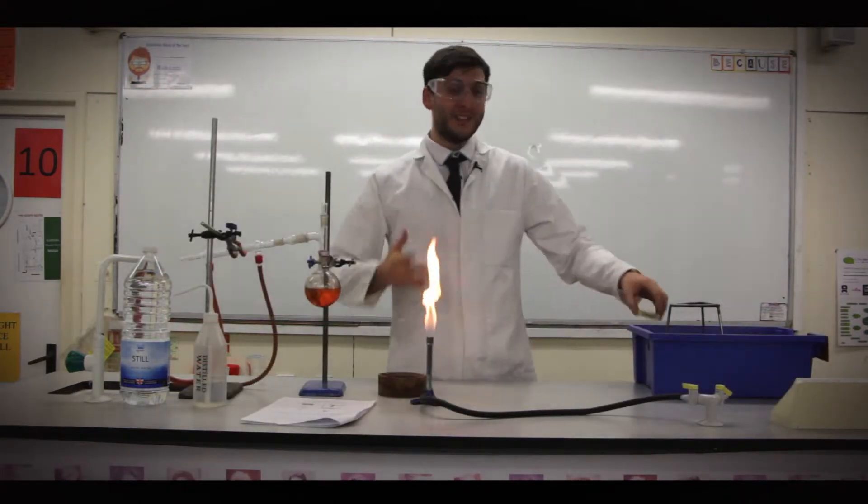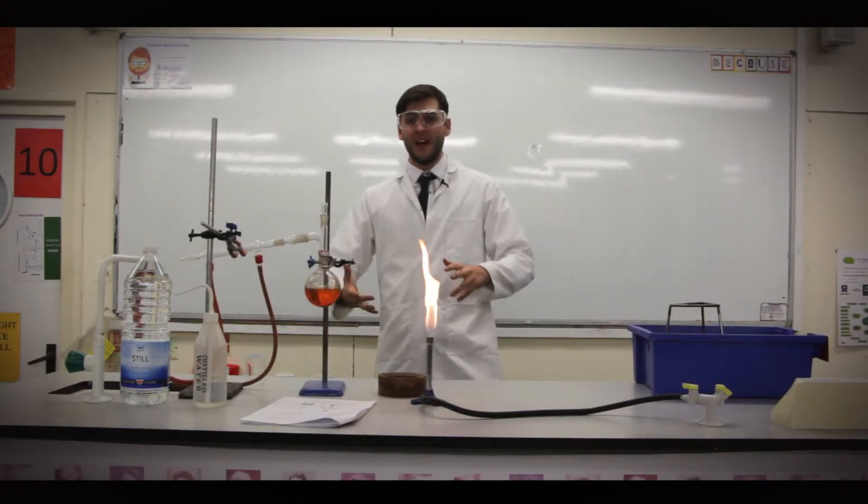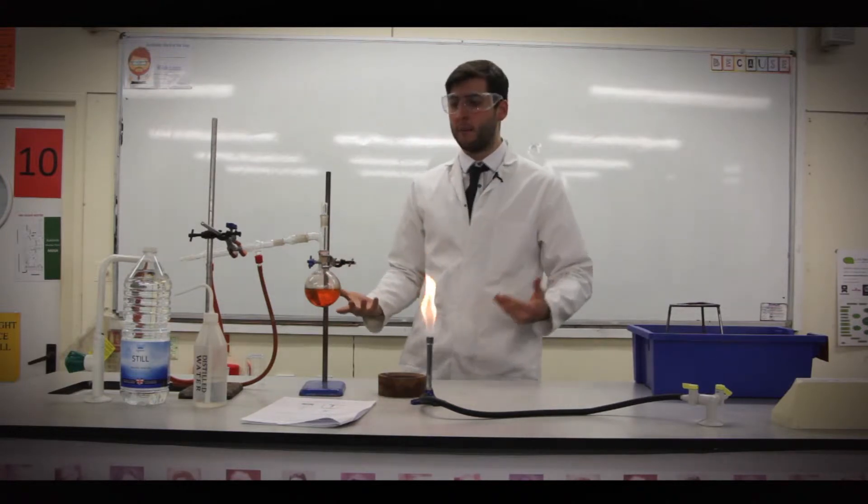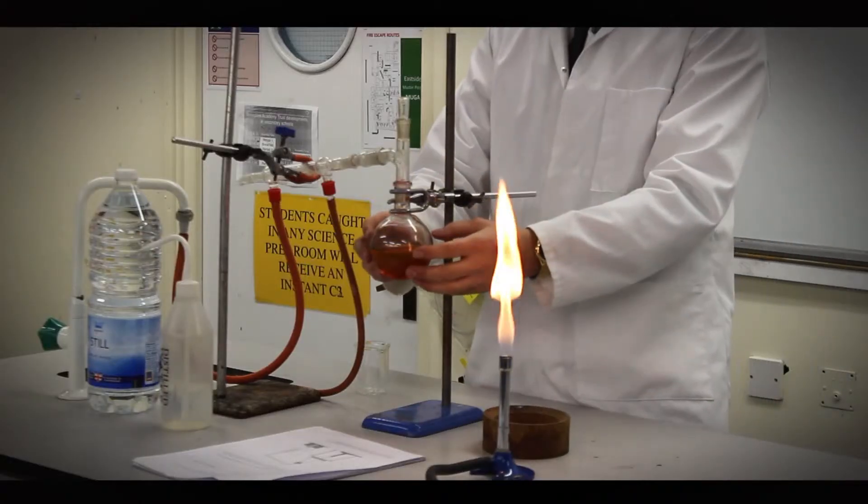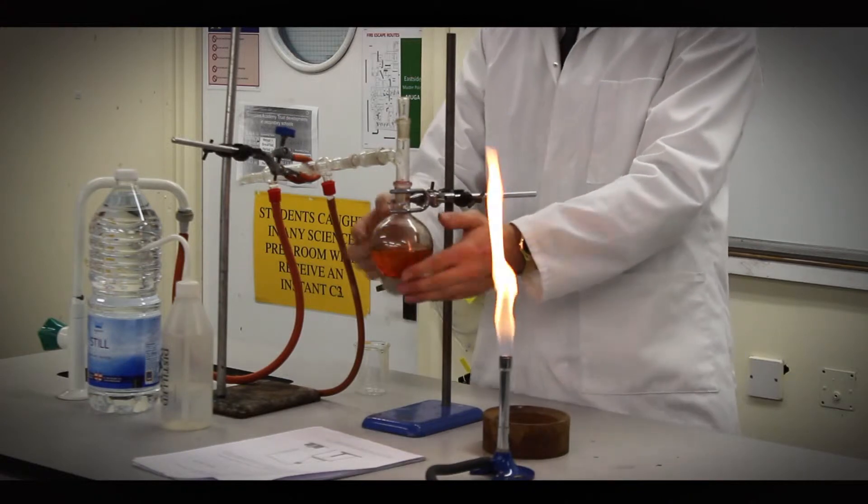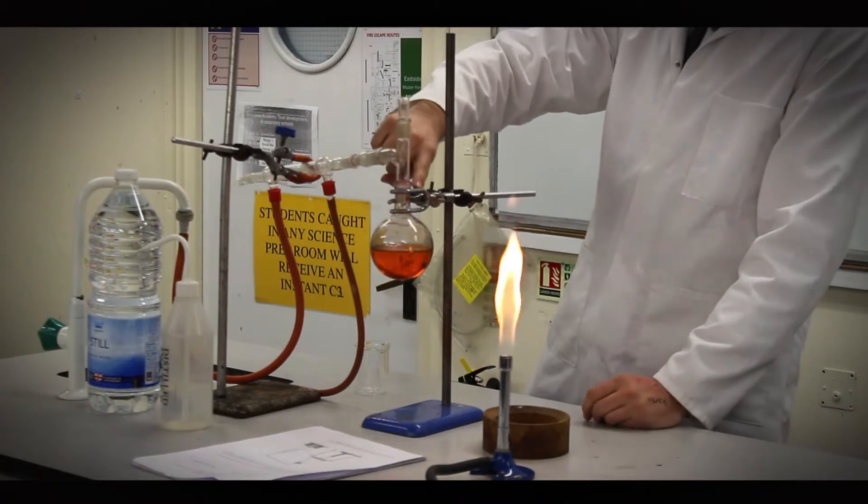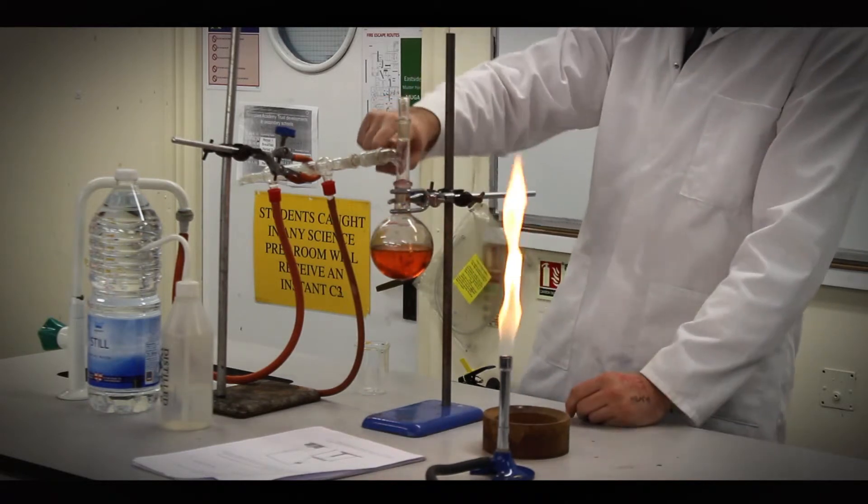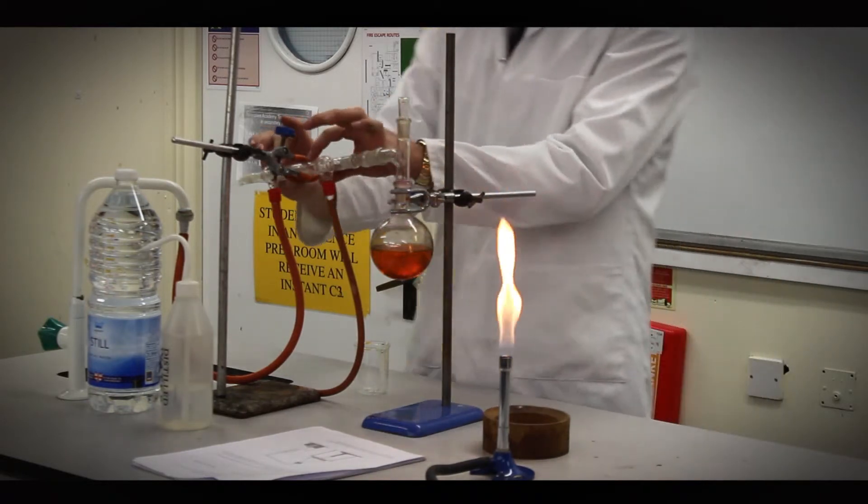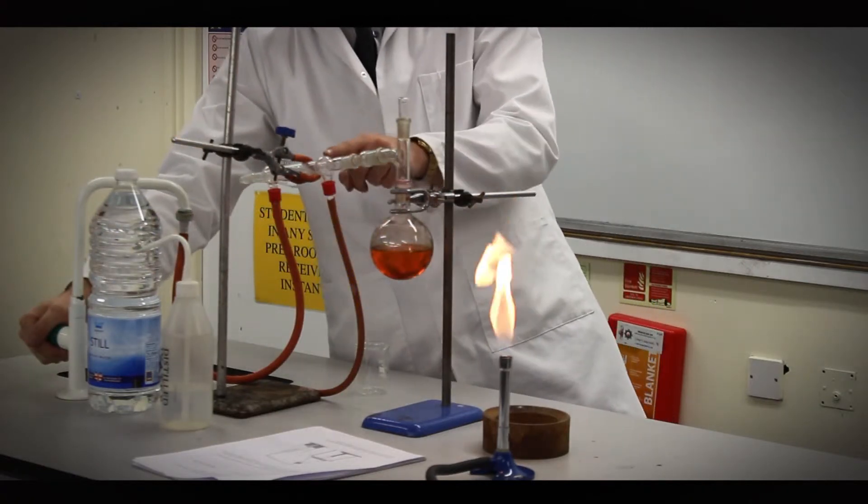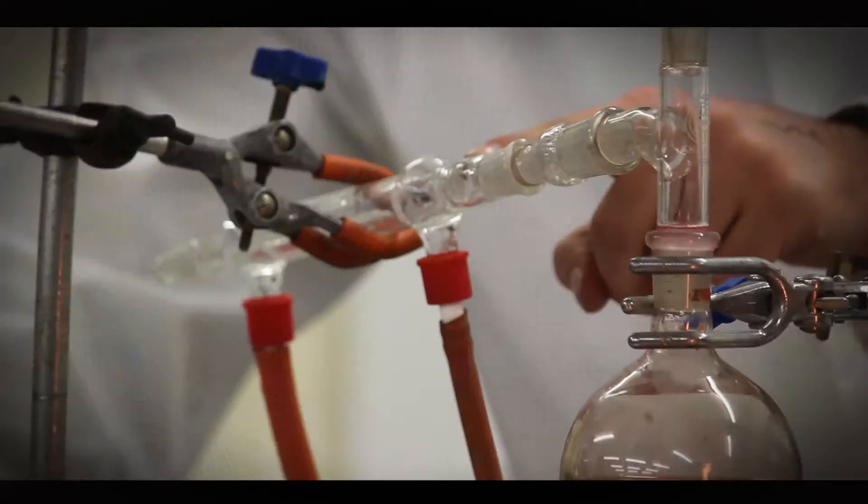So I'm going to do distillation for you guys. Now you will have done this in lessons, so this is more just a very quick recap. The first thing to point out, this is called a round-bottomed flask. Makes sense because it's got a round bottom. Then the gas, when we heat it up, will come up there into this, which is called a Liebig condenser, and I'm just going to turn on the tap now.